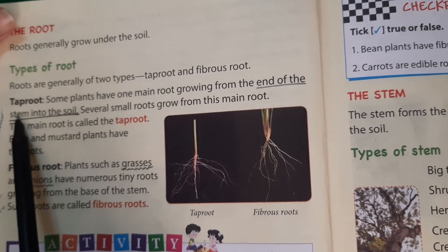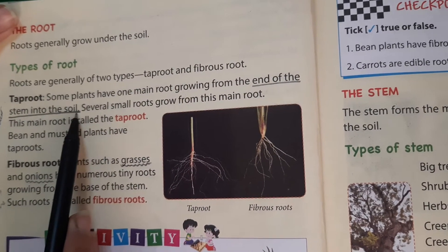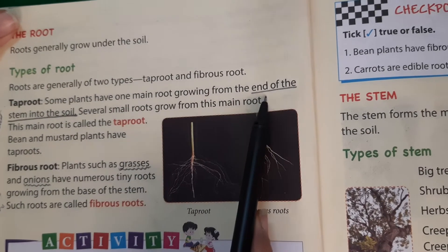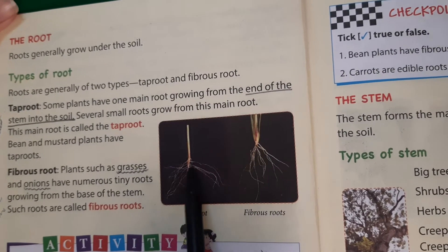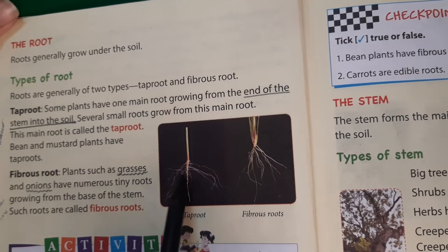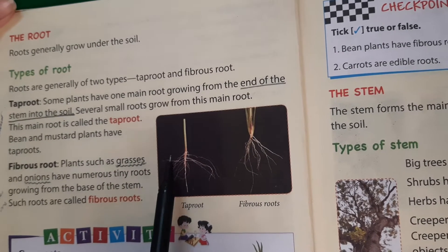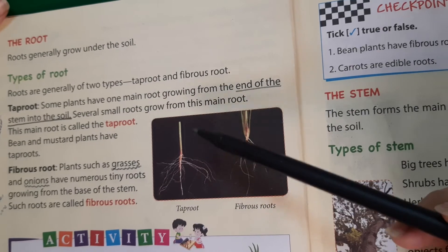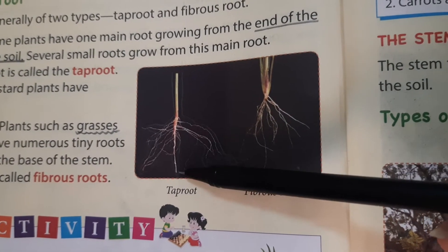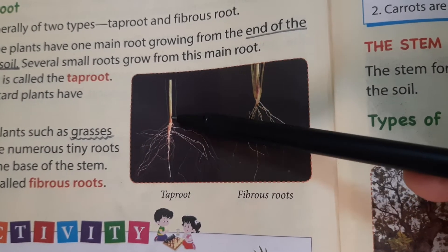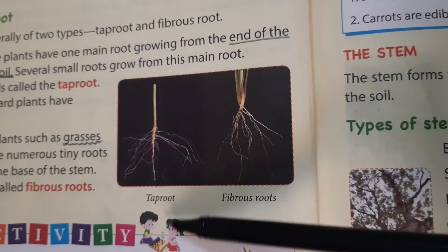So what are tap roots? Some plants have one main root growing from the end of the stem into the soil. From that single main root, many small, tiny roots branch out. This form of root is called the tap root. Here is an image — you can see the stem of the plant, and from it one unique single main root grows. From this main root, many small roots grow outward. This type of root is called a tap root.